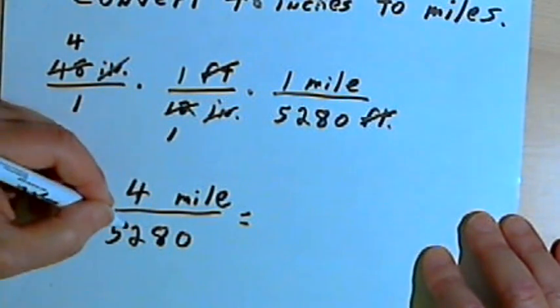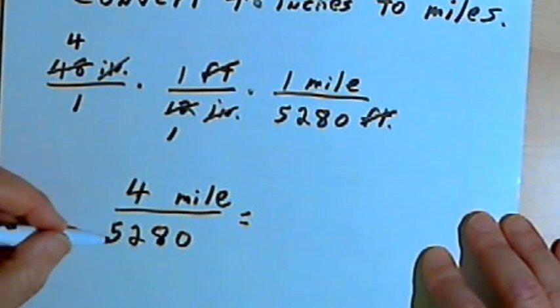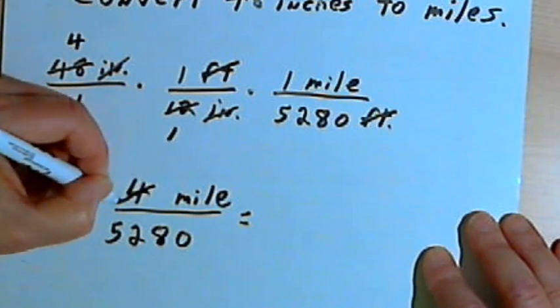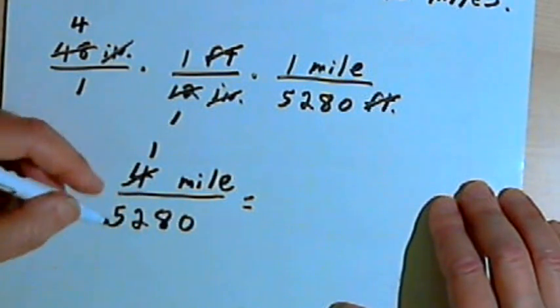So let's see if we can simplify this. I can divide 4 by 4, and I know I can divide 5,280 by 4, so let's see what I get. When I divide 4 by 4, I get a 1. Dividing 5,280 by 4...